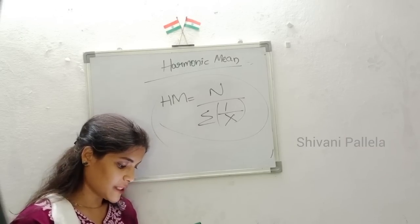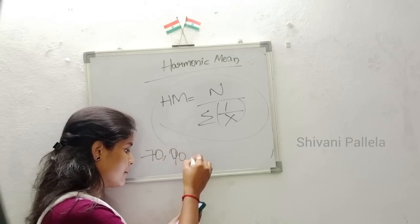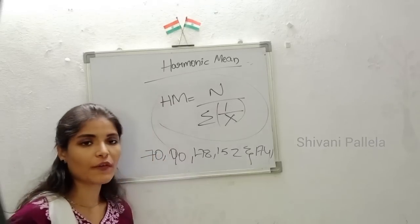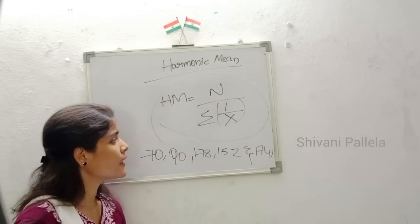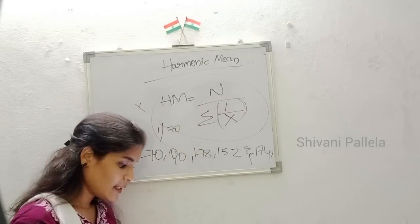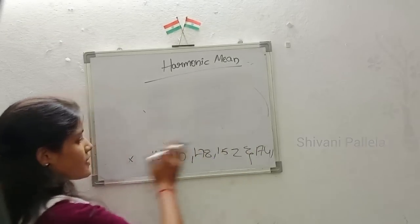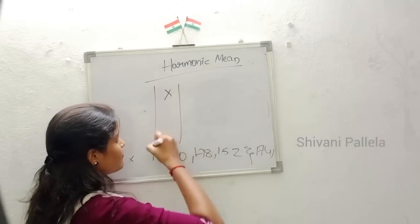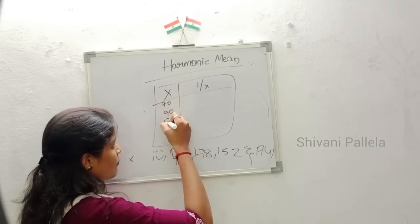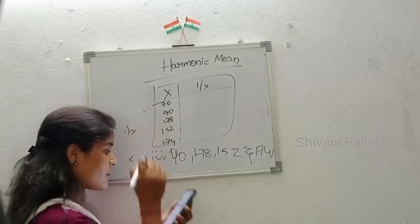The question gives X values: 70, 90, 178, 152, and 174. They ask us to find the harmonic mean. We create a 1/x column. So we calculate 1 divided by each x value: 1/70, 1/90, 1/178, 1/152, and 1/174.